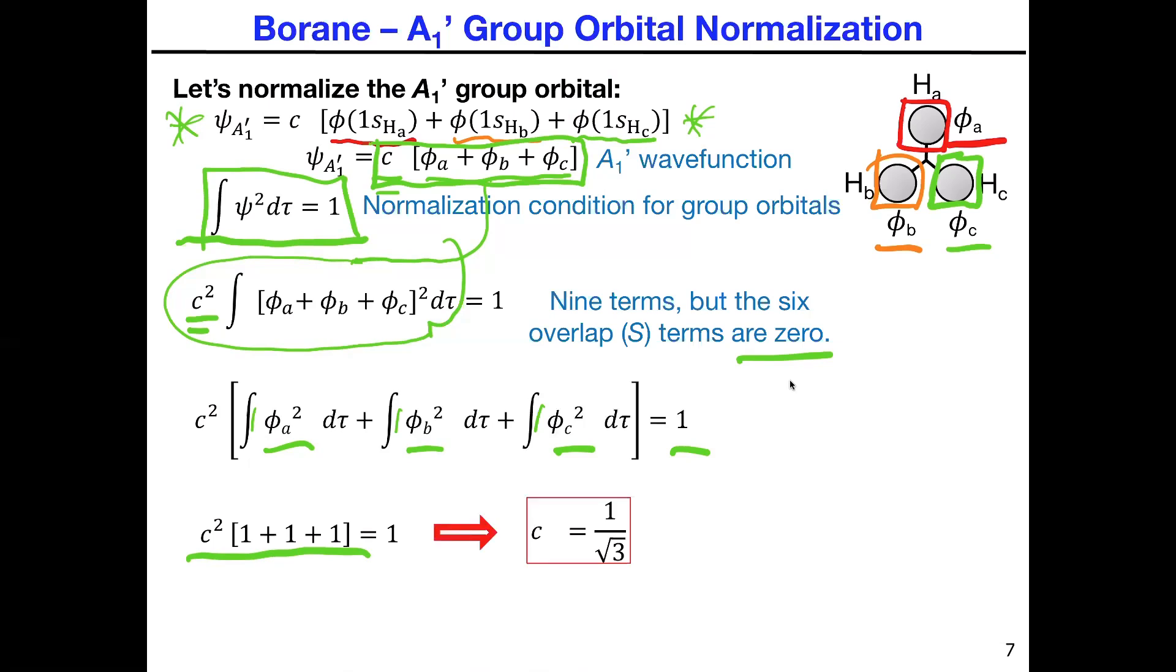In the end, if you solve the problem, c squared will be one over three. And then you have to take the square root of both sides, and that basically gives you c over the root three, which is what's shown here. That's the coefficient that winds up going into the front of that wave function. That's the normalization constant c.